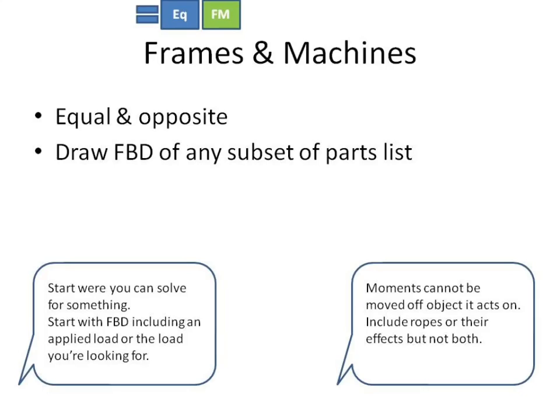Frames and machines are another special case of equilibrium. If you cut something and consider both the left-hand side and the right-hand side, whatever happens in the middle has to have equal and opposite loads. You can consider the free body diagram of any subset of the parts list. If you think about your object as something with an instruction manual, any subset of that parts list is a reasonable free body diagram. It's useful to start where you can solve for something, or draw a free body diagram that includes an applied load or the load you're actually looking for.